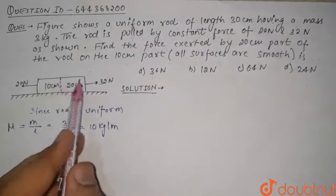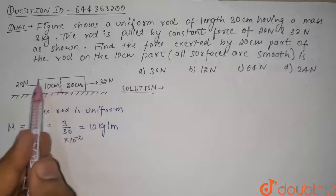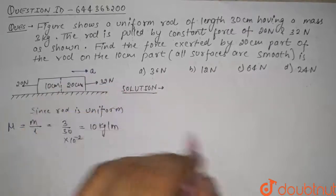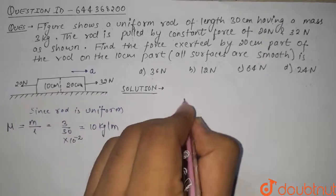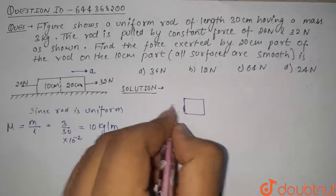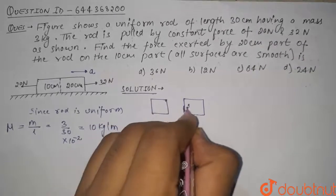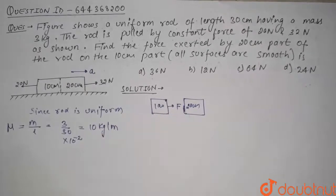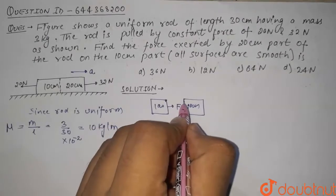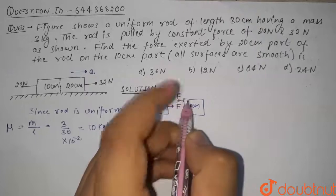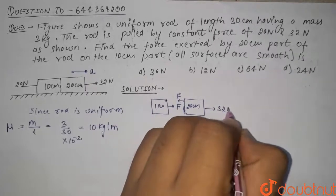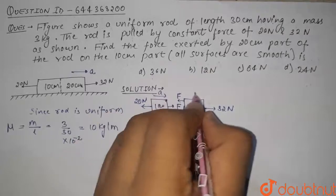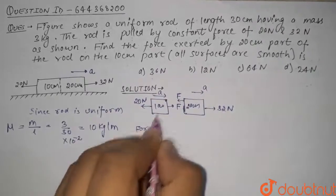We have been asked to find the force exerted by the 20 centimeter part on the 10 centimeter part. Let us assume that the acceleration of this rod is 'a' towards the right. The force that the 20 centimeter block exerts on the 10 centimeter block is F. This same force F acts on the 20 centimeter block towards the left, 32 newton acts towards the right, and 20 newton acts towards the left.